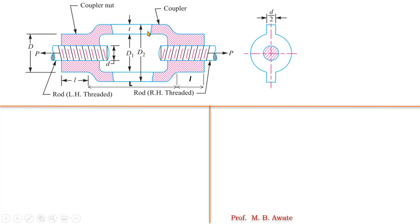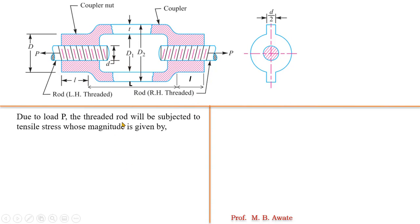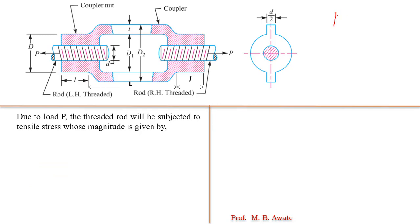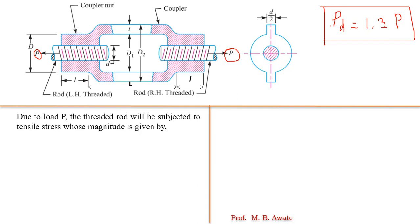We have just seen this figure and its terminology. Now we will see that in the case of a turnbuckle, we have to prove one equation where we use the term PD, which is the design load, equal to 1.3 times the normal load P. We will see the derivation of how this relation has occurred.